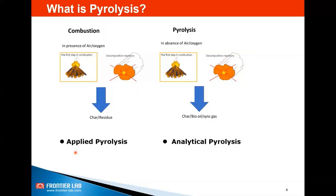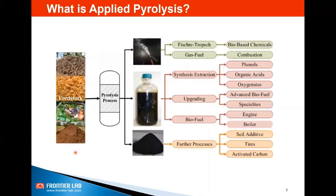Within the pyrolysis domain, there are two areas where a lot of research and development are happening. One is applied pyrolysis and the other is analytical pyrolysis. In applied pyrolysis, pyrolysis is used as a process to produce valuable products from a feedstock, biomass, or even waste materials. These products can be further enhanced by a catalytic process to produce speciality chemicals. We will talk about applied pyrolysis in related tutorials. In today's video, we will be focusing on analytical pyrolysis.